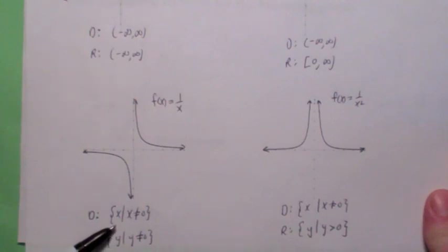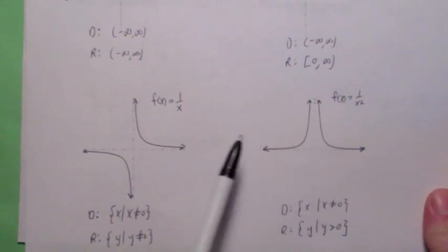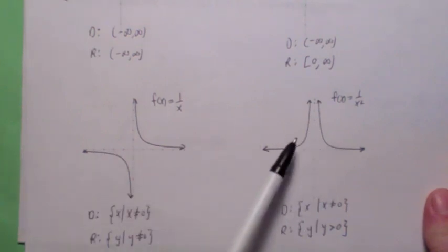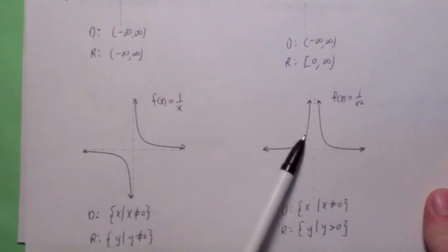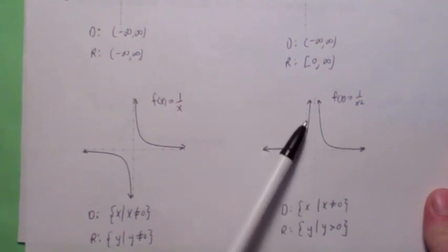So what is the domain? The domain is x can't equal 0. And the range, since this graph never touches the x axis, the y coordinate is never 0 either. That's the range. 1 over x squared looks kind of like 1 over x, except that both sides are going up to positive infinity as x gets close to 0.